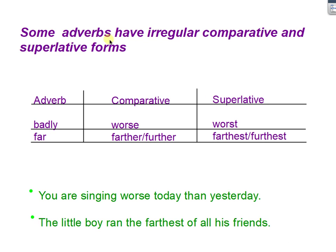Some adverbs have irregular comparative and superlative forms. For example, 'badly' becomes 'worse' and 'worst.' 'Far' becomes 'farther or further' and 'farthest or furthest.' For example: 'You are singing worse today than yesterday' — meaning you sang badly yesterday, but the way you are singing today is even worse than yesterday. 'The little boy ran the farthest of all his friends.'